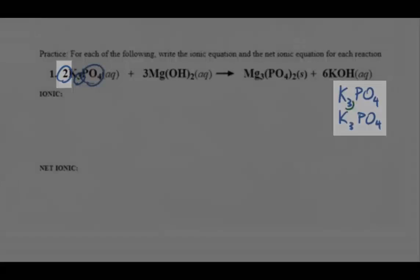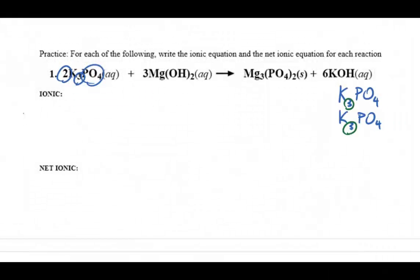So that would be a total of three plus three, or six aqueous potassium ions, and one plus one, or a total of two phosphate ions.